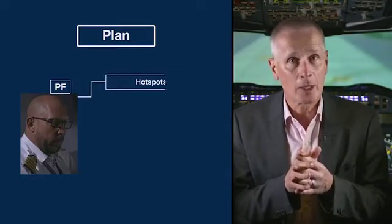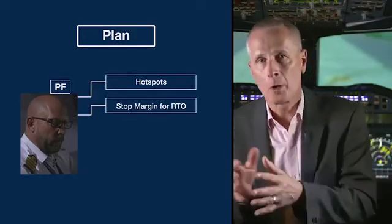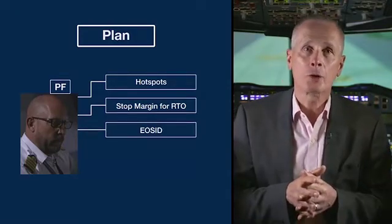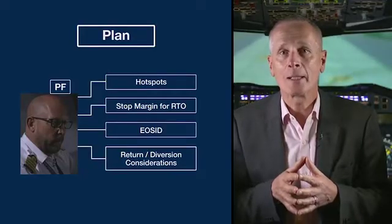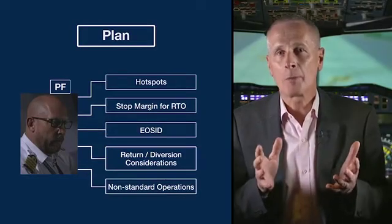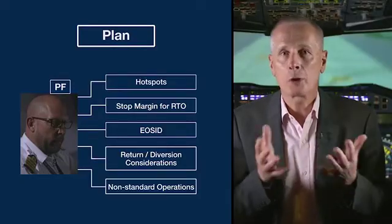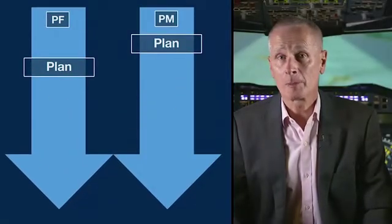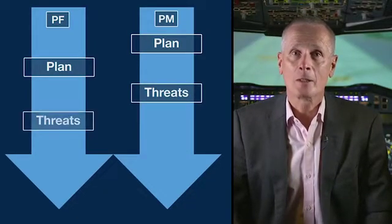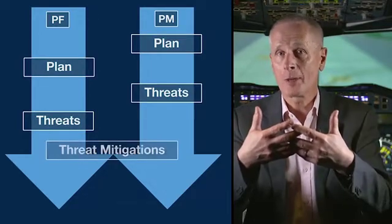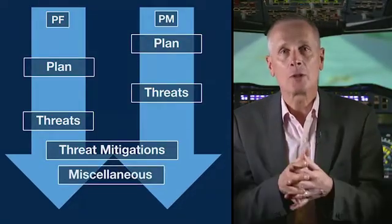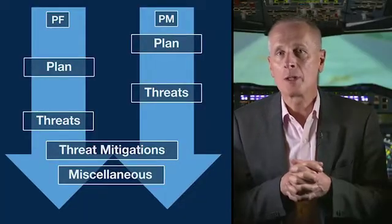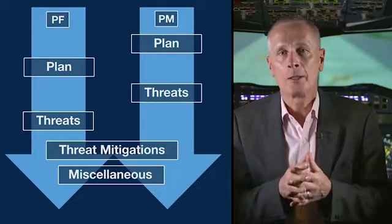Afterwards, the pilot flying gave additional strategic operational items important for the pilot monitoring. This part contains items like hot spots of the planned taxi route, the stop margin for RTO, briefing of the engine out departure route, and considerations for a potential return landing. It is a good idea to shortly recap non-standard operations at that stage — for example, if you have a cross-bleed engine start, it might be smart to briefly brief this procedure. For the identification of possible threats, it is again the pilot monitoring who starts. The briefing is continued with the joint discussion of mitigation strategies, and at the end there is a miscellaneous section — items such as the level of automation intended after takeoff, or briefing a cockpit observer.